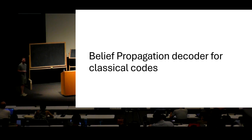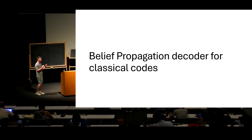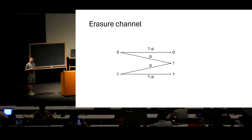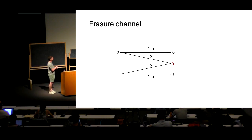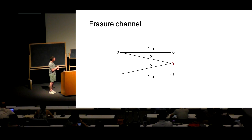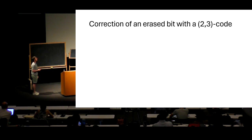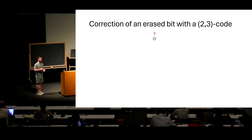We're going to look at the belief propagation decoder — the most popular decoder for LDPC codes. It's very efficient and also used in statistical physics to estimate local properties. We'll start with a simplified version using the binary erasure channel. In this channel, an input bit (0 or 1) is sent through perfectly with probability 1-p, but with probability p it's erased and mapped to a question mark. Our goal is to correct these question marks.